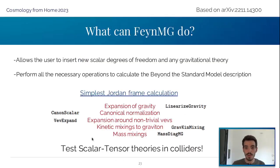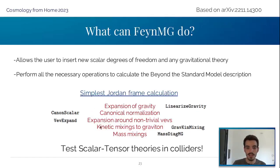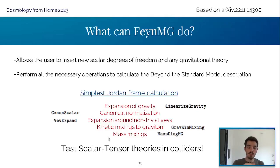You can take any model file from FeynRules, introduce any scalar tensor gravitational piece and any new degrees of freedom. Using the functions in FeynmG, you can linearize gravity, canonicalize scalar fields, expand around VEVs, deal with kinetic mixing, mass mixings, and much more. Essentially, FeynmG takes you from the modified theory of gravity plus the standard model to standard gravity plus beyond-standard-model, ready to use in FeynRules.